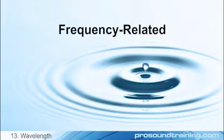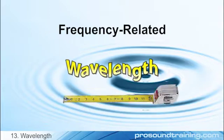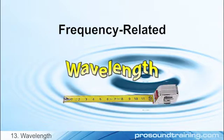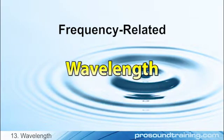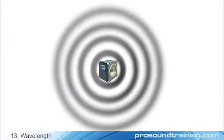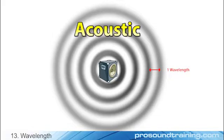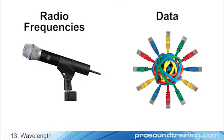Another frequency-related concept is wavelength. All waves have a physical size, whether they be audio, acoustic, or ocean. This size is called wavelength. One wavelength is the distance between like points on two consecutive waves of the same frequency. In this lesson, we will only consider acoustic wavelengths. In future lessons, I'll show when wavelength must be considered for electrical signals.